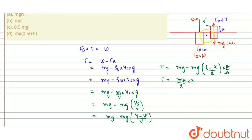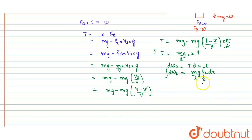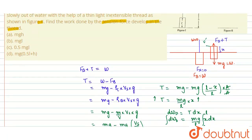As we pull the cylinder further out, the tension force increases. To find the total work done, we use integration. The small work done in displacing the body by dx is dW equals T·dx. Substituting T equals mg·x/l, we get dW equals (mg/l)·x·dx. Integrating from x equals 0 to x equals l (until the whole body is pulled out), the total work done is W equals one-half times mgl, i.e., 0.5·mgl.